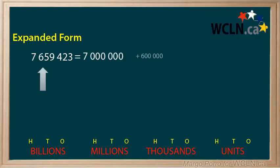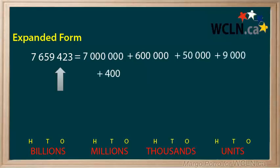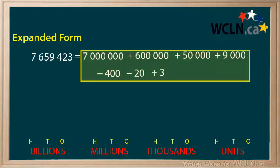Next I add the 6 followed by 5 zeros. It is worth 600,000. Then I continue this pattern with 50,000, 9,000, 400, 20, and 3. Remember this is standard form and this is expanded form.